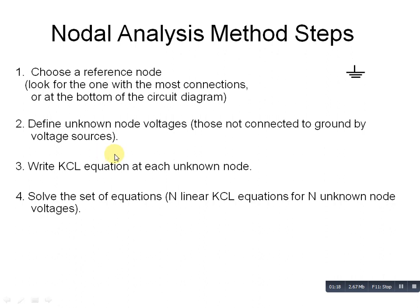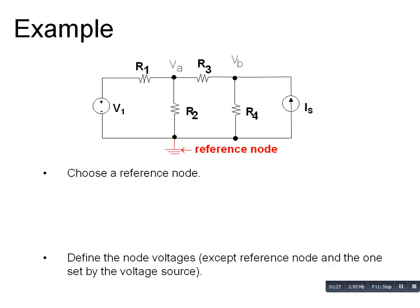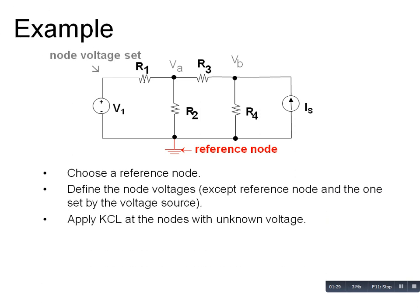This is our next example which depends on node analysis. This is our circuit. I will solve it. In this circuit, first of all, choose a reference node. We will take the reference node where no electric element is connected, or where more than one branch meets. Like here we have one, two, three, four, five branches, so we take the reference node here.